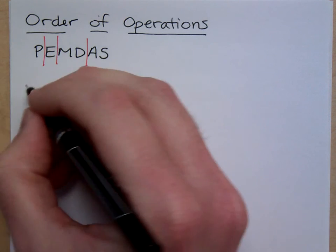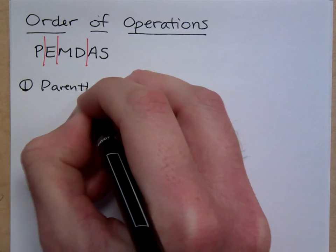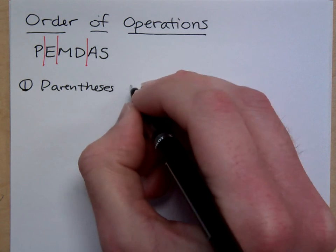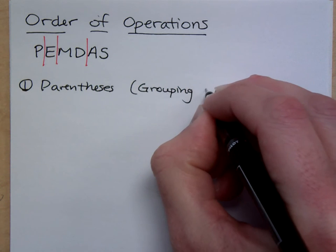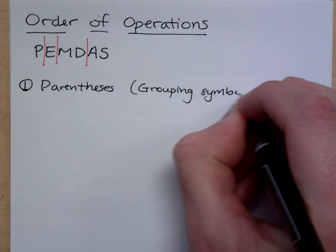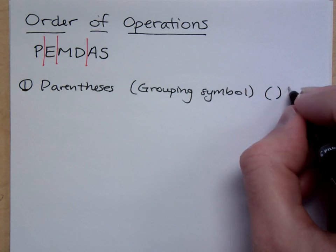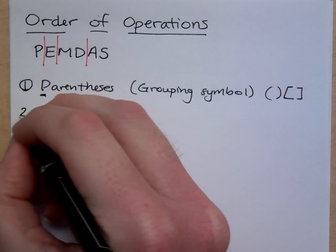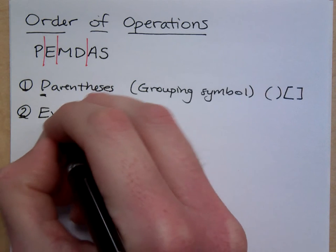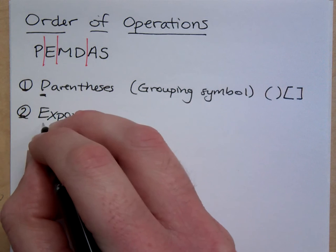Here are the steps. Step one. P stands for parentheses. Really what this means is any type of grouping symbol. Do what's inside the grouping symbols first. Now, we may use parentheses. We may use brackets for grouping symbols, so just be aware of that. After parentheses, we have exponents. So, after you've done what you can do inside parentheses, then you move on to exponents.